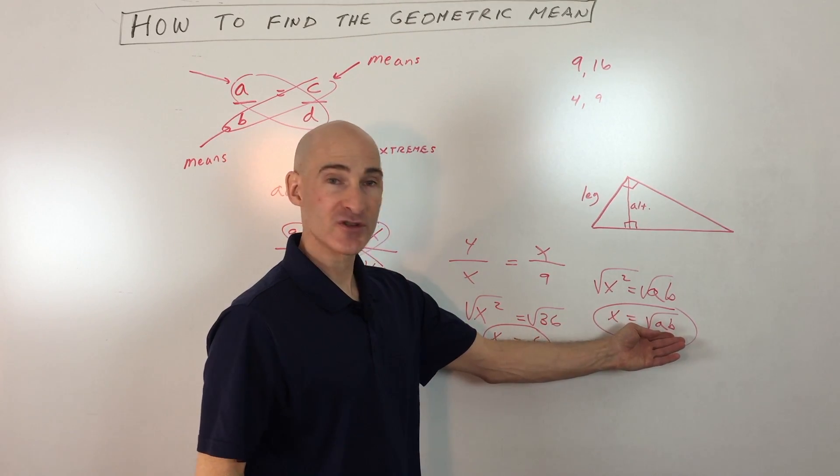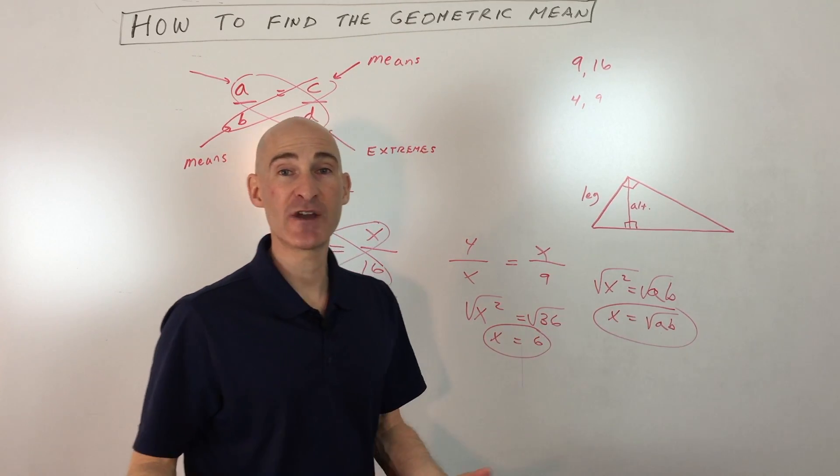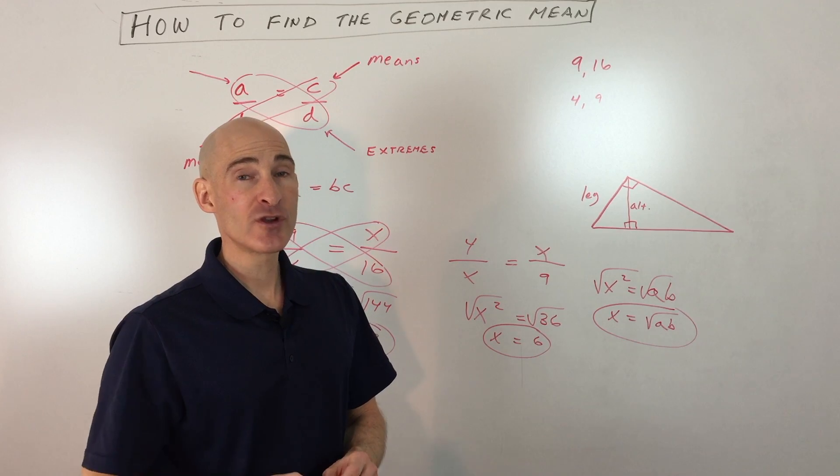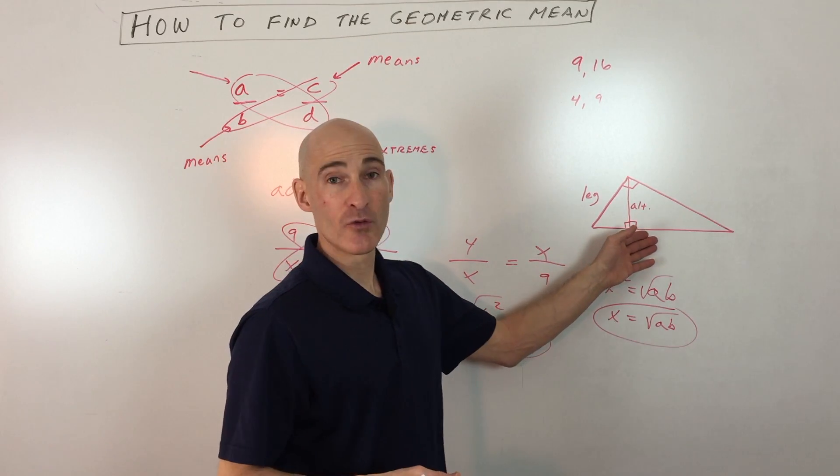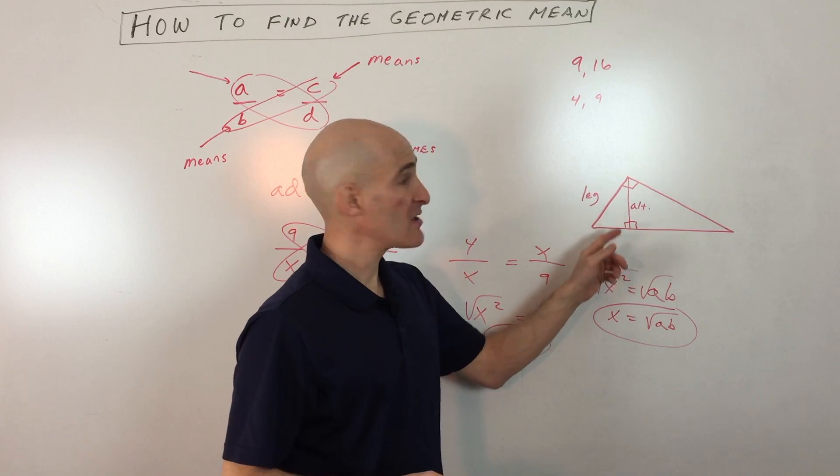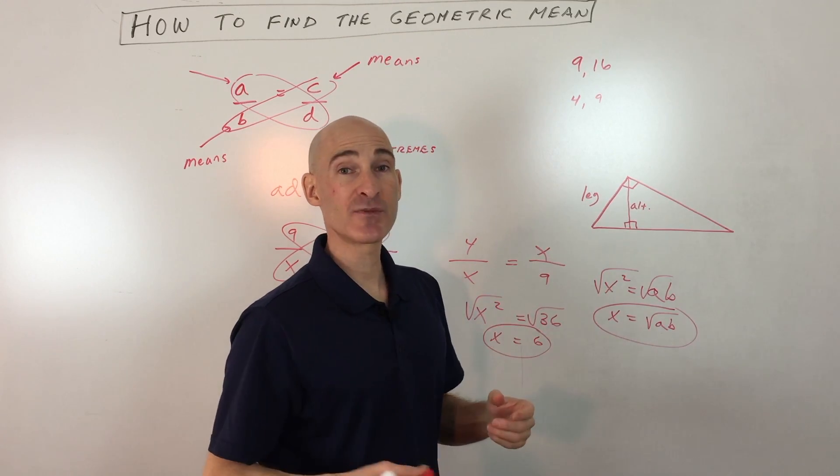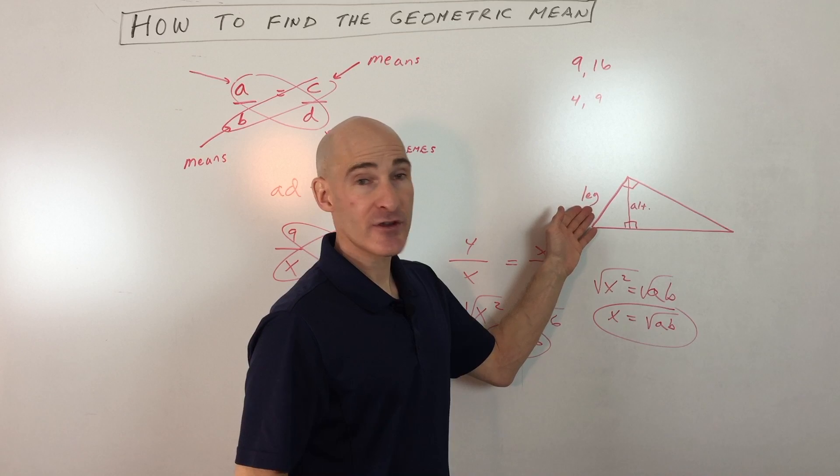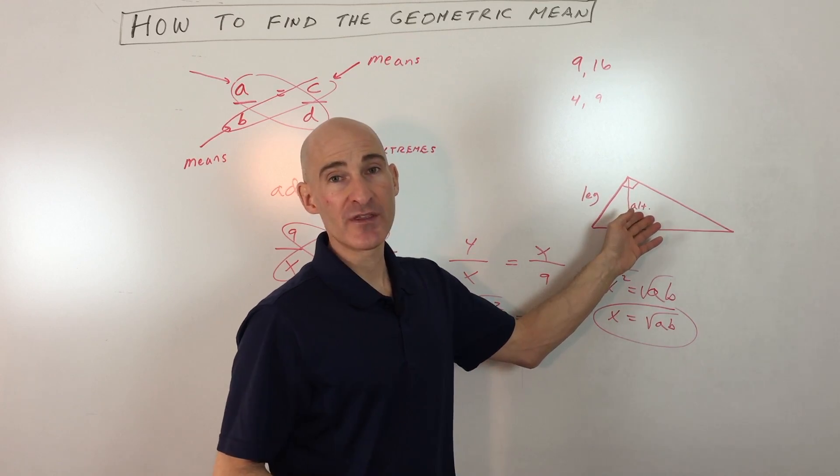Now if you're interested in learning about the geometric mean as it applies to right triangles, when you drop an altitude, you end up getting three similar triangles, and there's something called the leg geometric mean theorem and the altitude geometric mean theorem. I'll have links for those if you want to check those videos out.